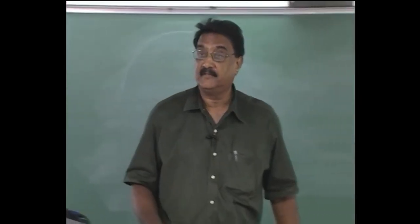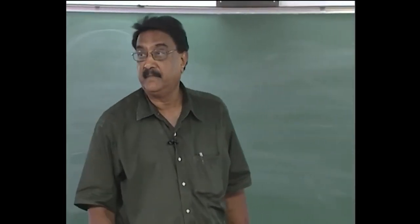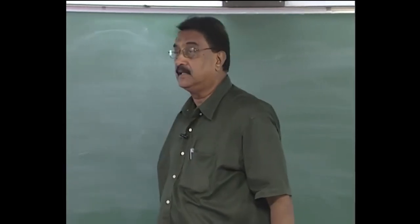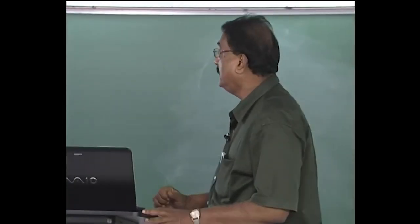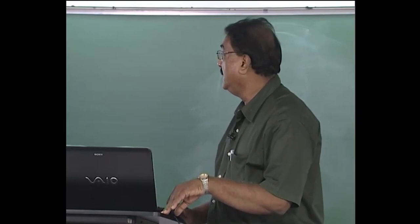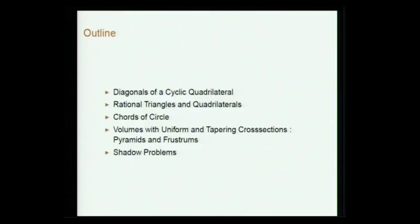We will continue with the discussion of mathematics in Brahmagupta's Brahmasphutasiddhanta. This is the second part. We will be discussing the diagonals of a cyclic quadrilateral, then rational triangles and quadrilaterals, then chords of a circle — those are the plane figures. Then we go to volumes with uniform and tapering cross sections, pyramids and frustra, and shadow problems.